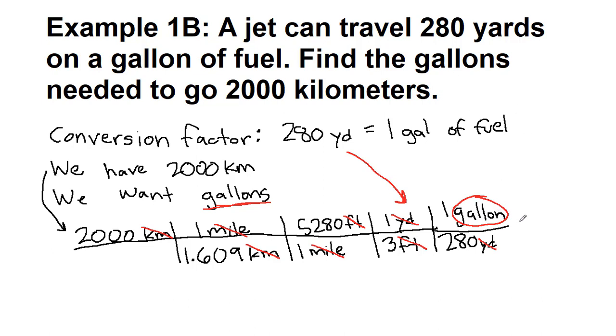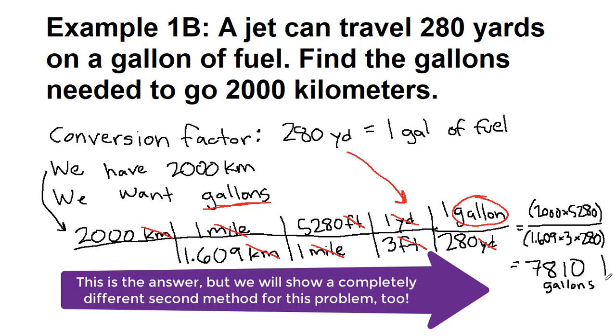And so now all we have to do is multiply everything together. We have 2000 times 5280, and on the bottom we have 1.609 times 3 times 280. Always remember the parentheses around this. And when we put that into our calculator, we get 7813. I'm going to round to three significant figures, and that's gallons of fuel. And that's our final answer.